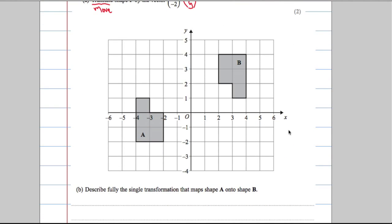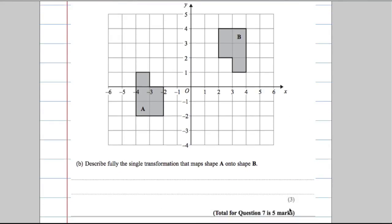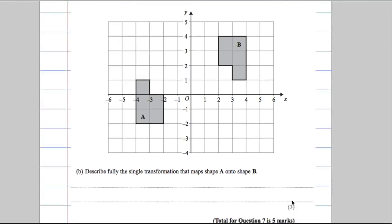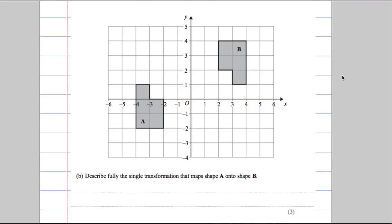The next part asks us to describe fully the single transformation that maps A onto B. I always recommend looking at the number of marks — three marks for this part — so I'm going to want three pieces of information. If you've got a good eye for this you should recognize that going from A to B the shape has been turned, and the word we use for that is rotation.